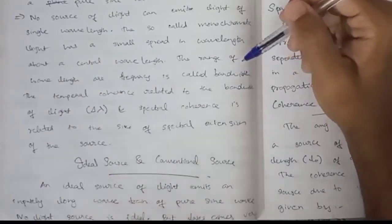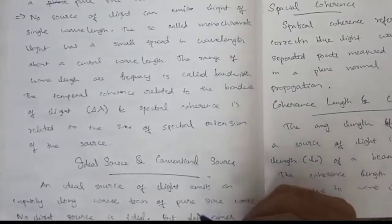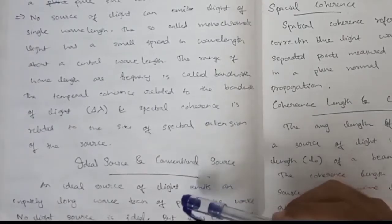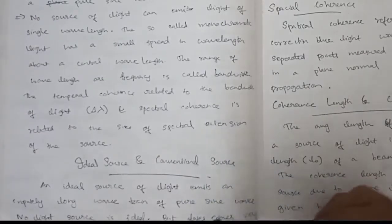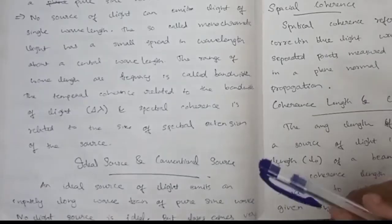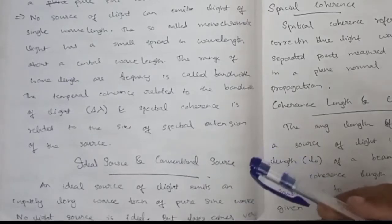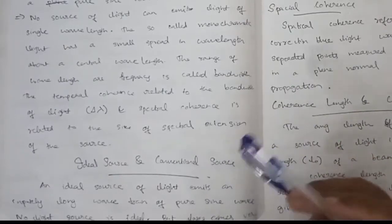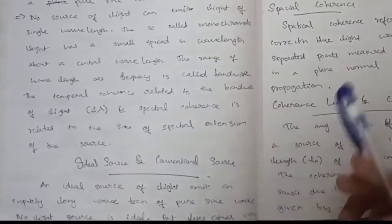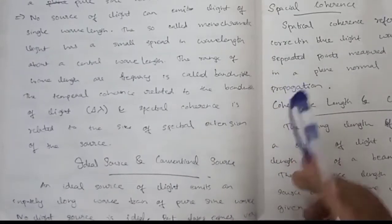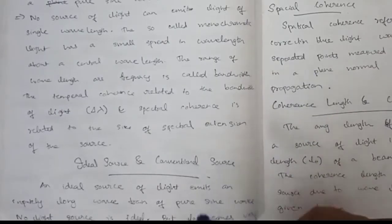There is a distinction between an ideal source and a conventional source. An ideal source of light emits an infinitely long wave train of a pure sine wave. No light source is truly ideal; a laser source comes closest to it.